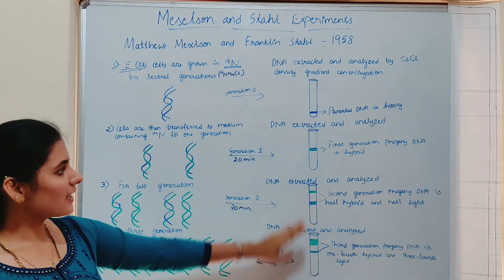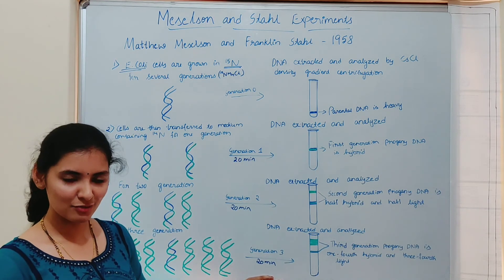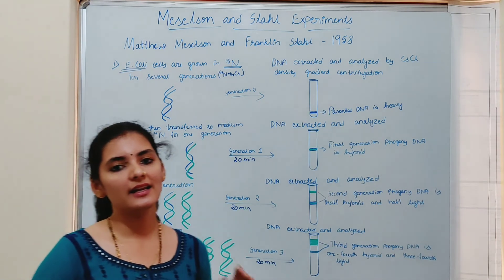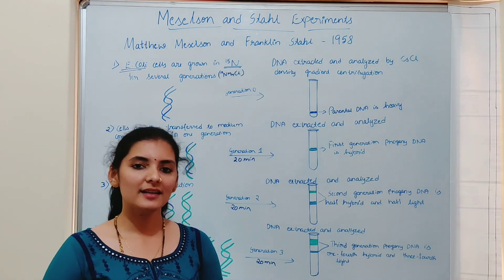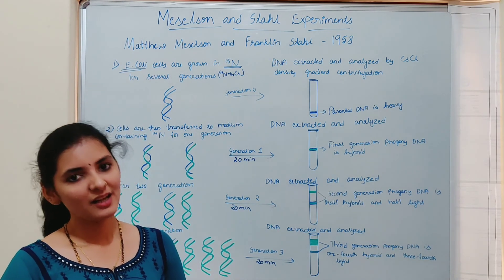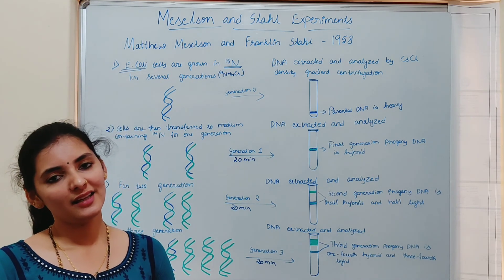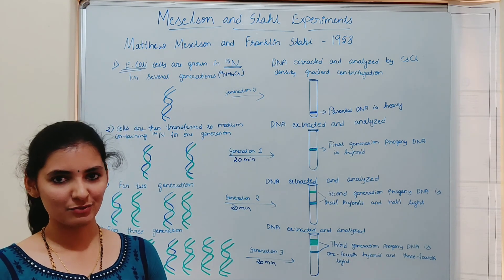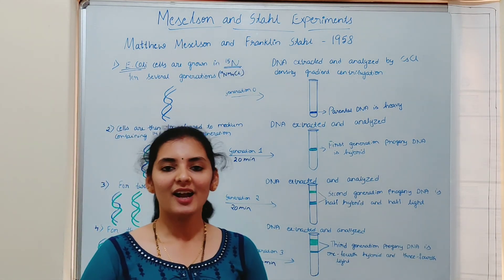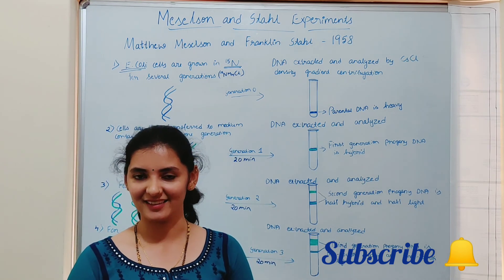That is how Meselson and Stahl proved that DNA replicates in a semi-conservative manner. In the same year, Taylor and his colleagues conducted a similar experiment on Vicia faba (beans plant) using radioactive thymidine, and again proved that DNA replicates in a semi-conservative manner. I hope you liked this video. If you did, please hit the like button and subscribe to my channel. Thank you.